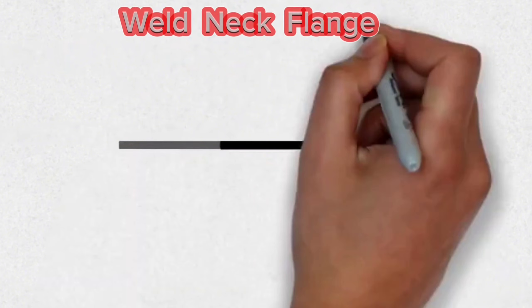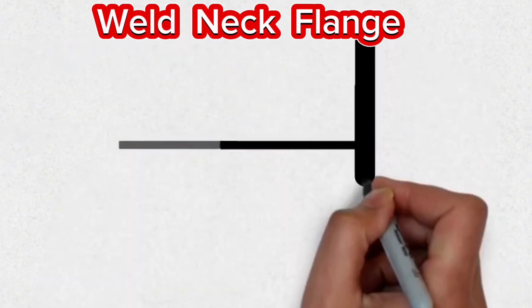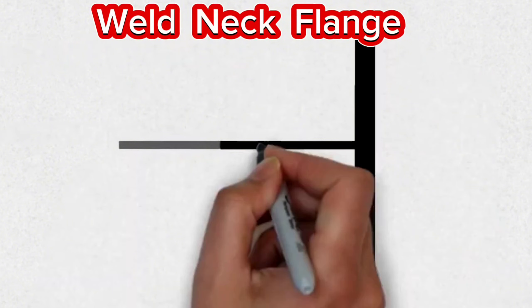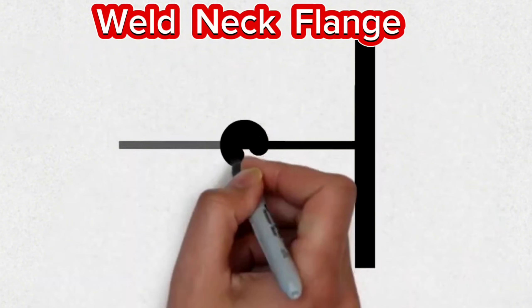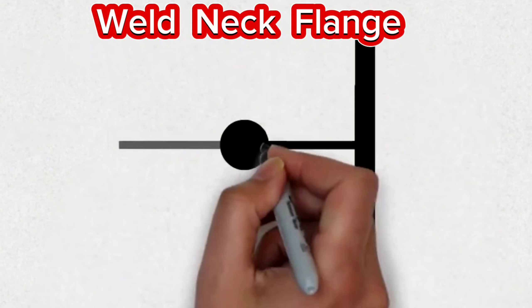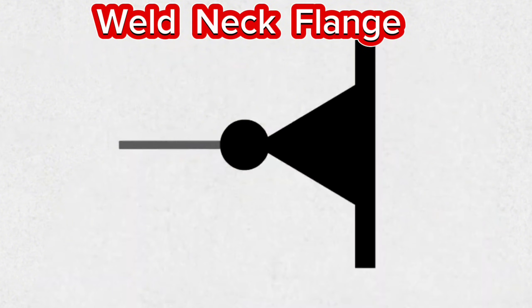This symbol, which is used in pipe isometrics, is the isometric symbol of the weld neck flange. These flange symbols are used in pipeline projects where welding.